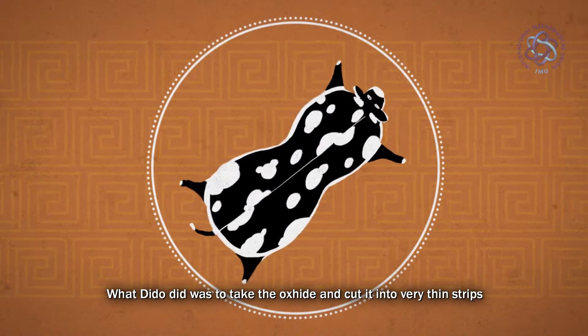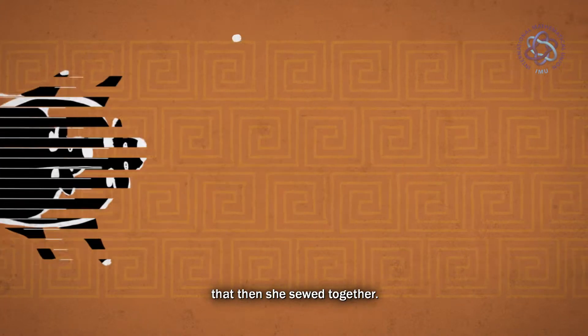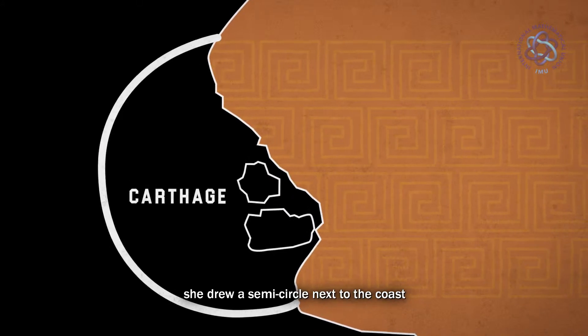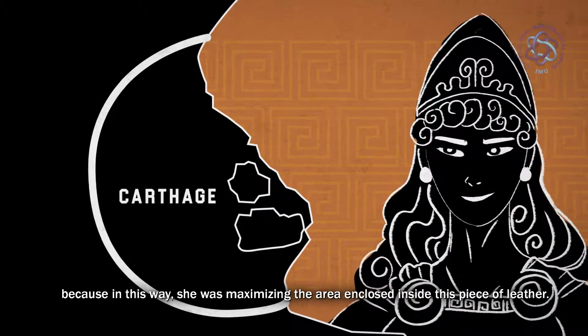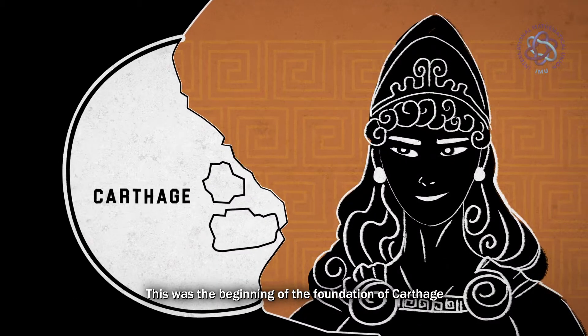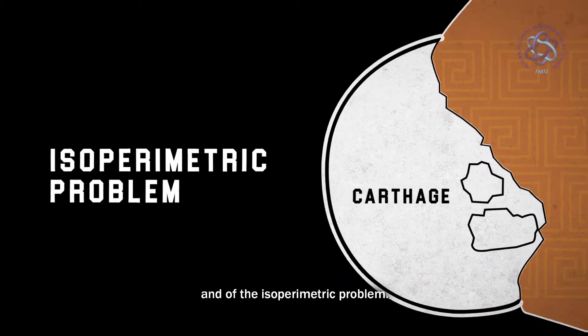What Dido did was to take the oxhide and cut it into very thin strips that then she sewed together. In order to enclose as much land as possible, she drew a semicircle next to the coast. Because, in this way, she was maximizing the area enclosed inside this piece of leather. This was the beginning of the foundation of Carthage and of the isoperimetric problem.